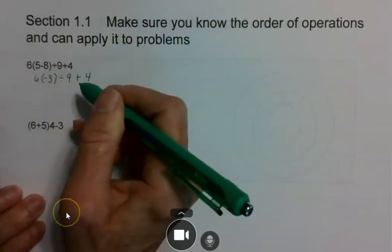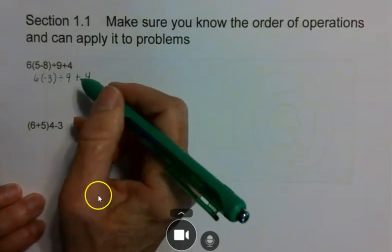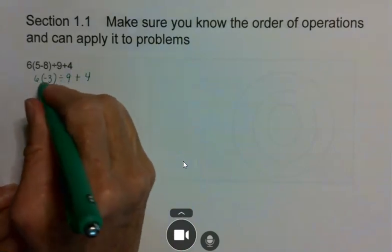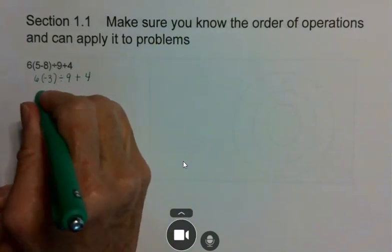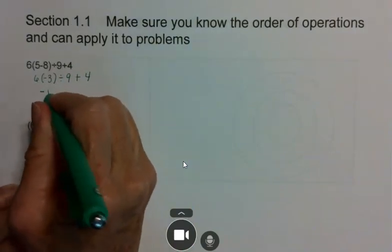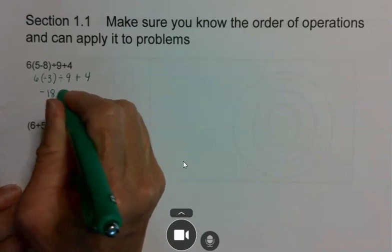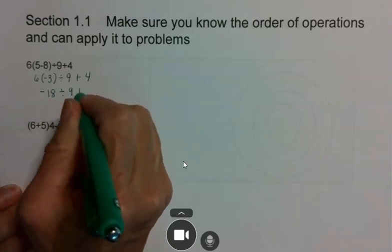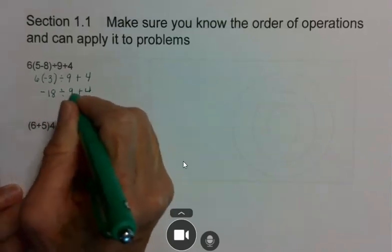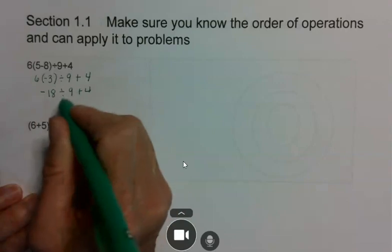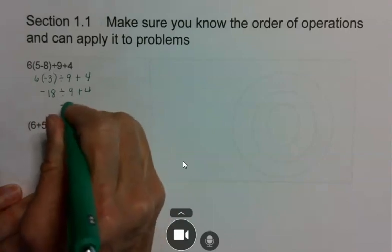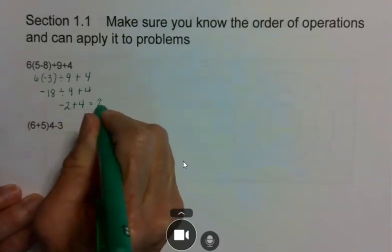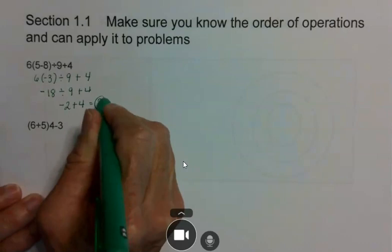From left to right, you're going to want to do all your multiplication and division. So 6 times negative 3 is negative 18, divided by 9 plus 4. Negative 18 divided by 9 is negative 2, plus 4 is going to give you a positive 2.